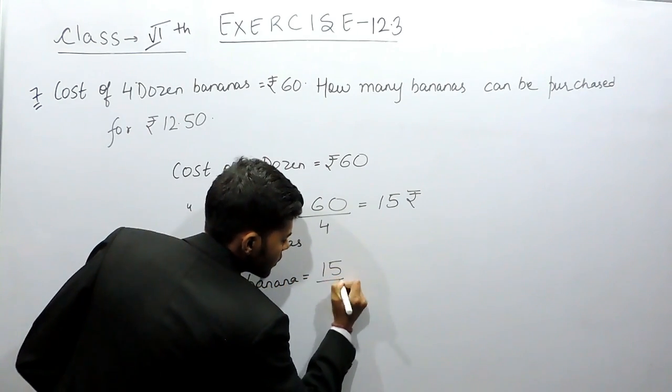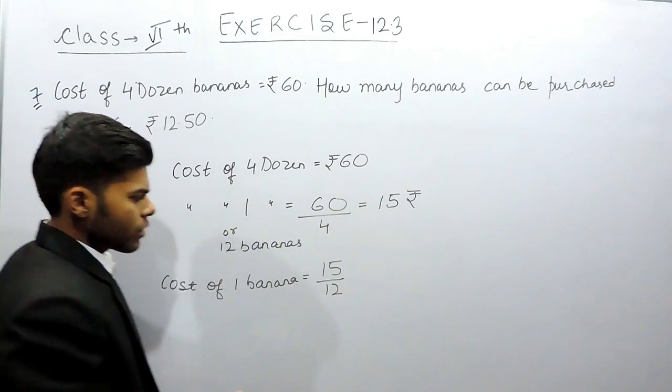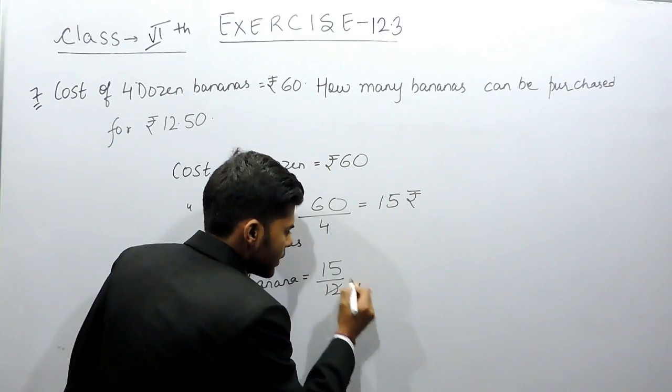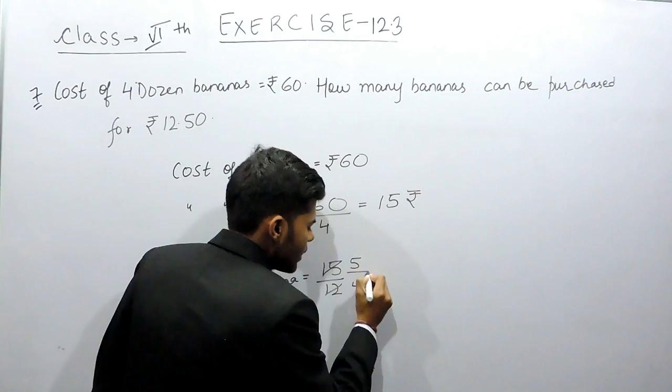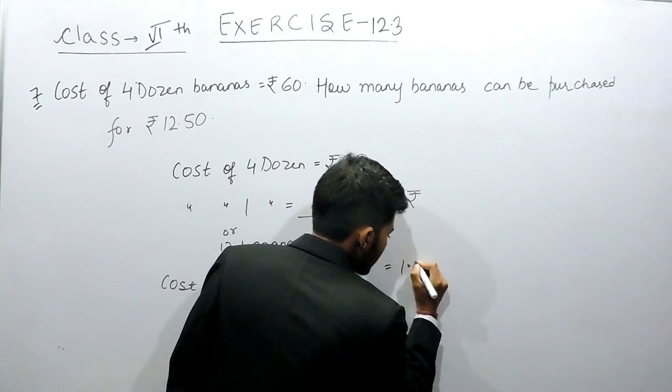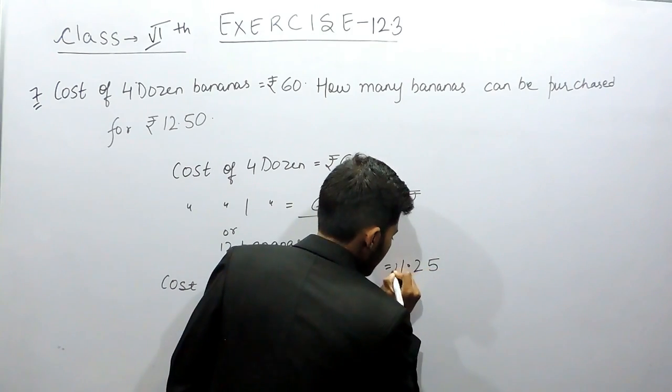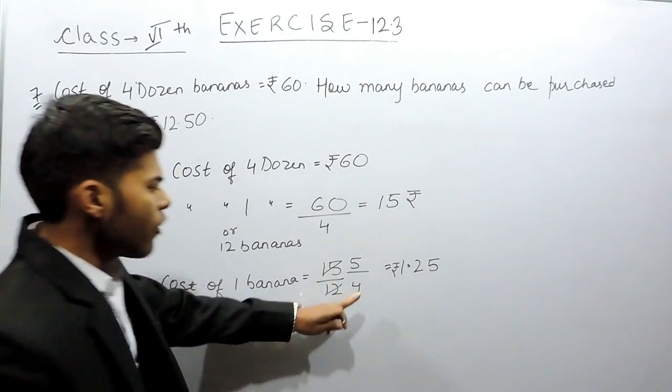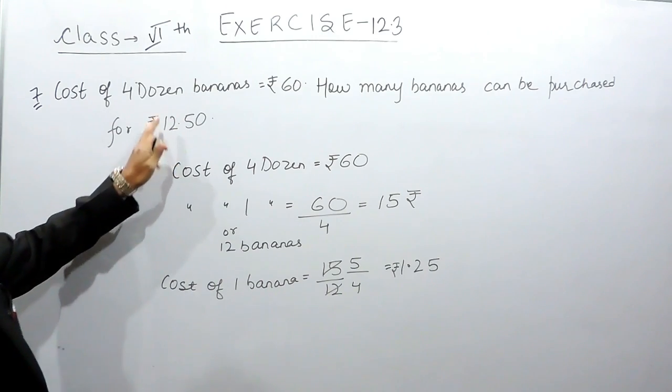Cost of one banana will be equals to 15 by 12. So 3 times 4 is 12, 3 times 5 is 15, that will be equals to 5 by 4, or we can say 1.25 rupees. This is the cost of one banana.